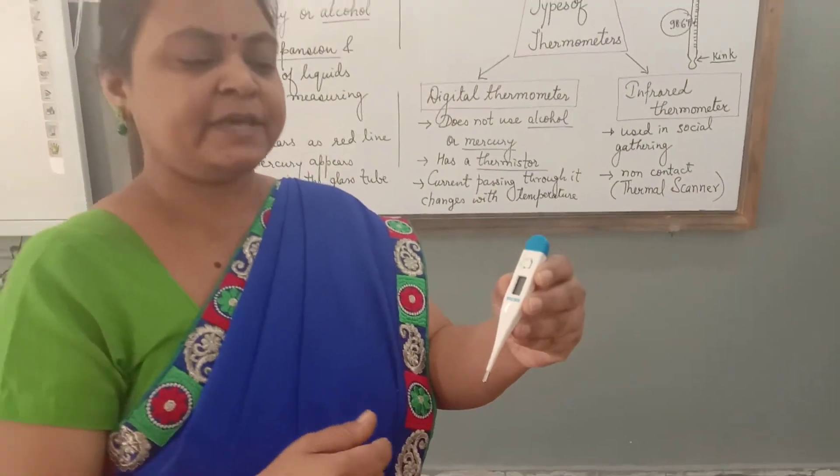But nowadays, this kind of thermometers have become outdated. We use digital thermometers. This is a digital thermometer used in the hospitals and also at home for measuring the temperature of body. When you have fever, you must have used this. In this, mercury or alcohol is not used but we are using thermistor.